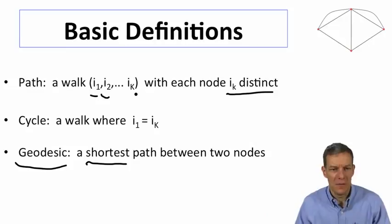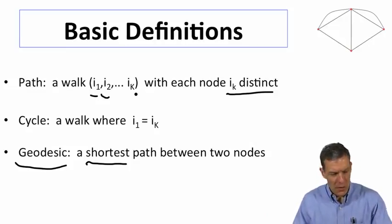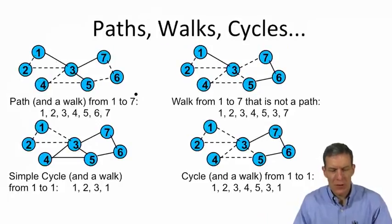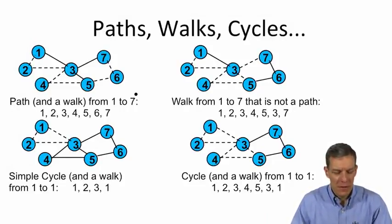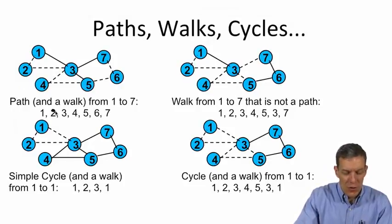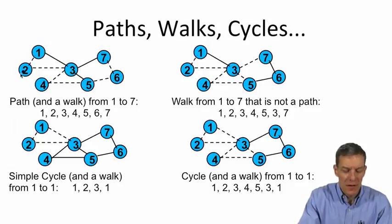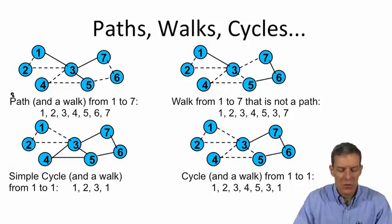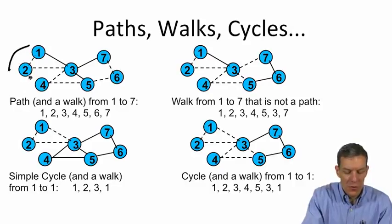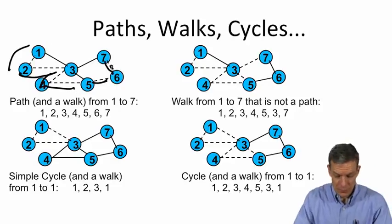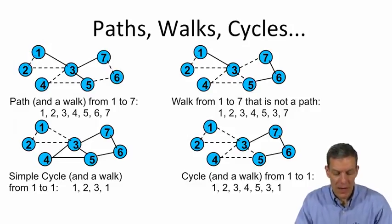One other term that's going to be very useful, geodesic. A geodesic is a shortest path between two nodes and shortest means we just count how many links there are in that path and we want to find what's the fewest number of links we need to go from node one to node seven. In terms of pictures, here's a set of networks on seven nodes and the first one represents a path and a walk from node one to node seven. We go from one to two, two to three, three to four, four to five, five to six, six to seven. So that's going to be a path which is also in this case a walk.